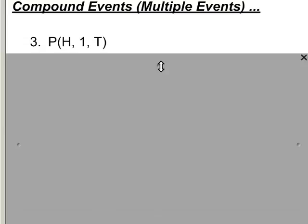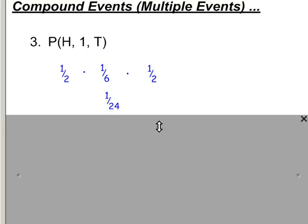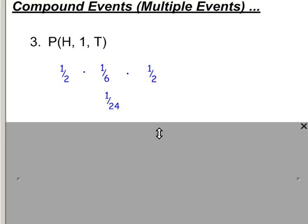To wrap up, let's combine these ideas. I want to get heads, then roll a one on the die, then flip tails on the coin. There's a one-in-two chance of heads, a one-in-six chance of rolling a one, and a one-in-two chance of tails. All independent events — I just multiply those numbers: one-half times one-sixth times one-half, and there's a one-in-twenty-four chance that all three occur.